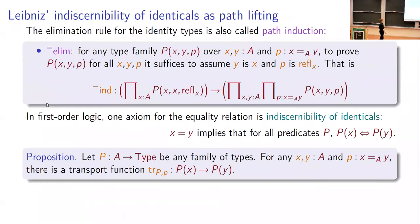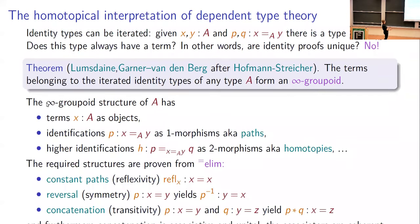The Hofmann-Streicher result was 1995. The homotopical ideas in dependent type theory were discovered independently by Awodey-Warren and Vladimir Voevodsky in the mid-2000s. The results about the infinity groupoid structure are around 2008-2009.